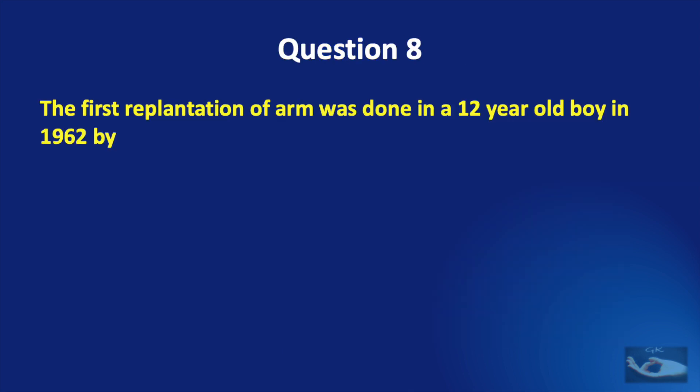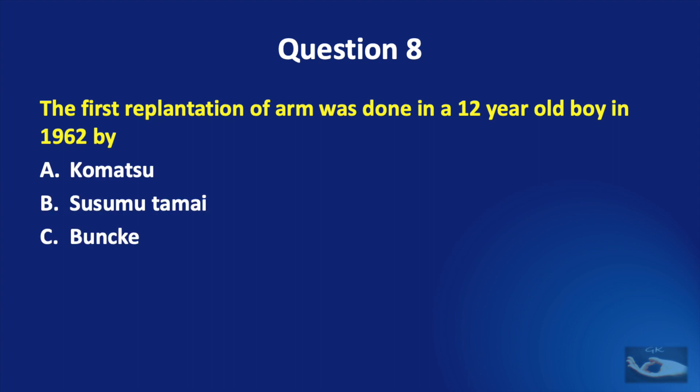Question number 8. The first replantation of an arm was done in a 12-year-old boy in 1962 by: Komatsu, Susumu Tamai, Bunky, or Malt?